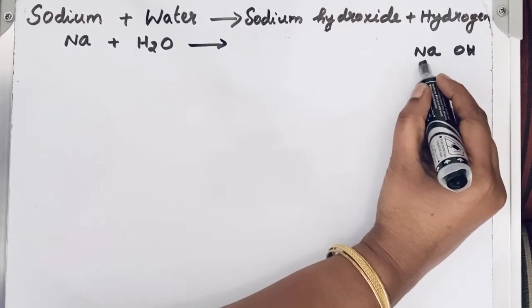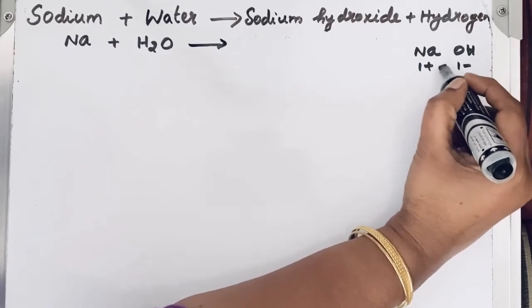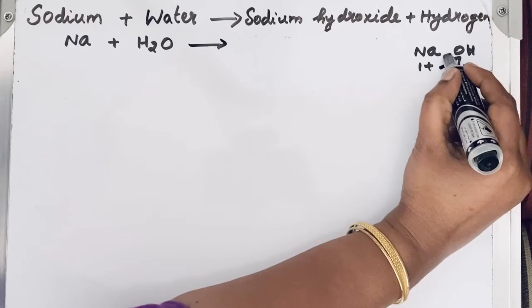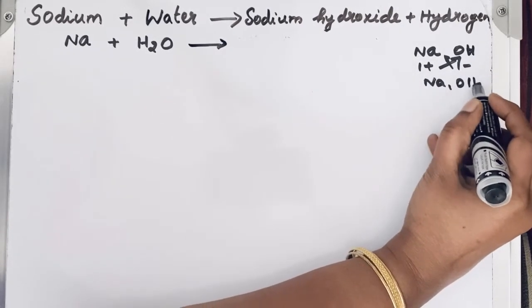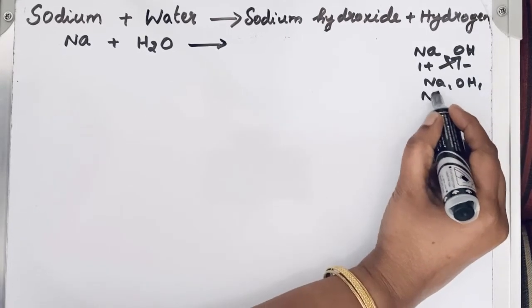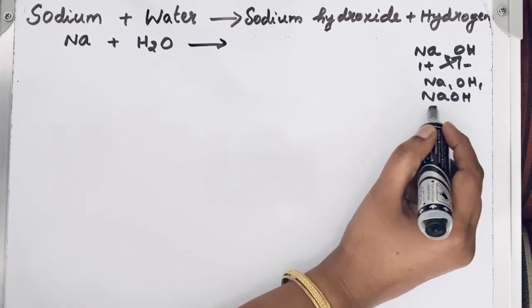The charge of sodium is 1 plus and for OH 1 minus ion. So when we criss-cross, we will get like Na1 and OH1. So this we can write it like NaOH. So this is the chemical formula of sodium hydroxide.